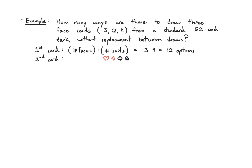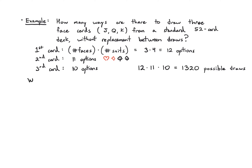Once we have the first card, the second card only has 11 options because one has been taken out. And the third card only has 10 options. So the number of ways to draw is 12 times 11 times 10, which is 1,320 possibilities — those are the number of three-card hands you could draw that have all face cards.